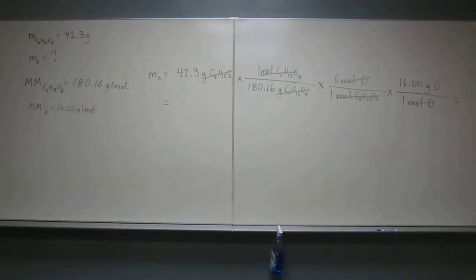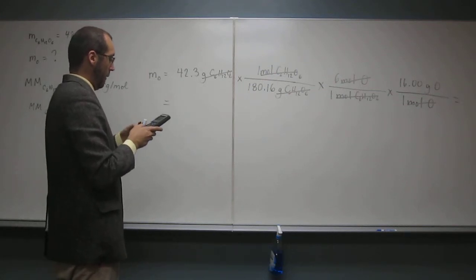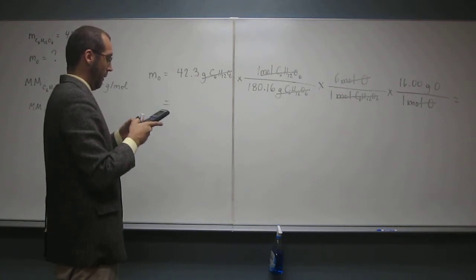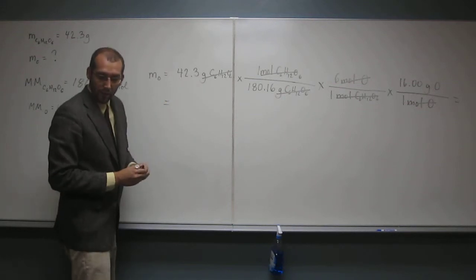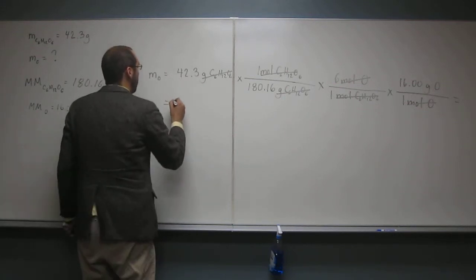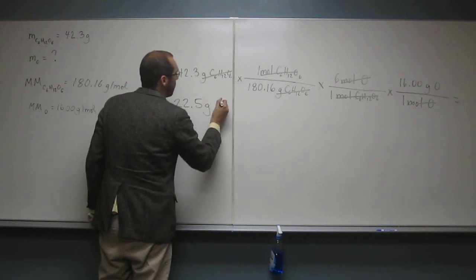Does that make sense? It does. Okay, so let's get our calculators out, and say, 42.3 divided by 180.16, multiply that number by 6, and then multiply that number by 16, and to three significant digits, we get 22.5 grams of oxygen.